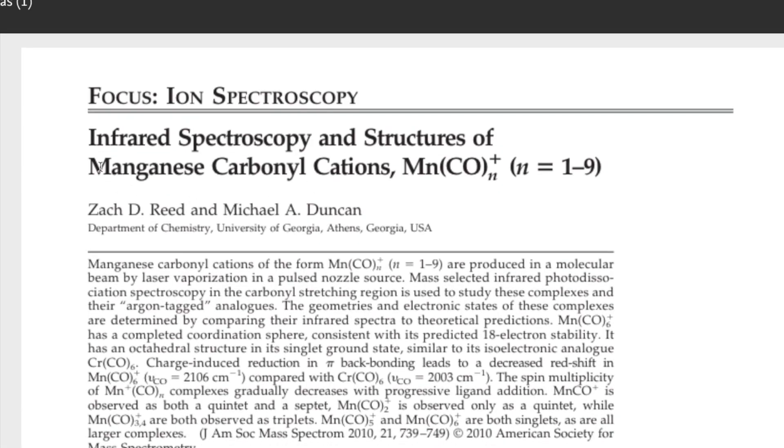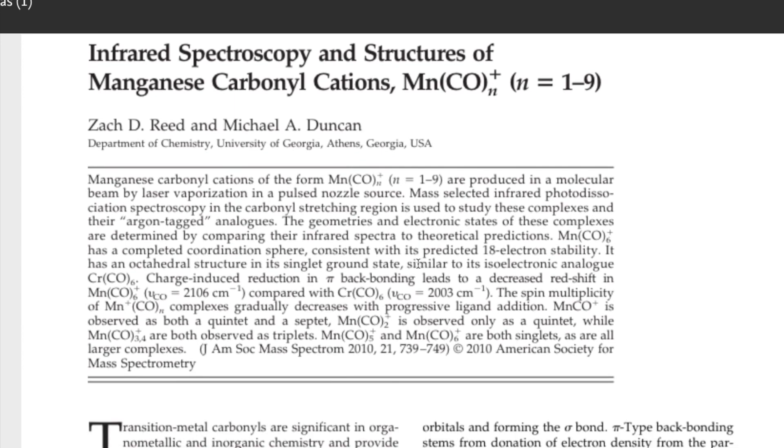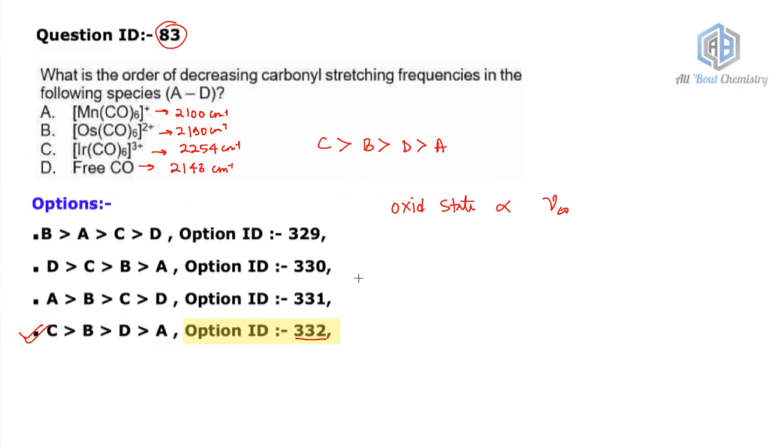We generally know that on increasing the oxidation state, your CO frequency also increases, right? The other ones are following that order, but this manganese complex was one of them there. You can consider it as an exceptional case also. I'll show you a reference paper where this has been discussed. This is a reference paper: IR spectroscopy and structure of manganese carbonyl cation Mn(CO)ₙ⁺. Here you can see they have given in the introduction itself that charge-induced reduction in the pi back bonding leads to decreased red shift of Mn(CO)₆⁺ that comes around 2106 cm⁻¹. So that makes this question correct, or you can say the answer key is actually correct for this question.